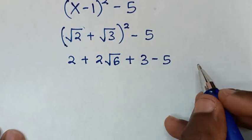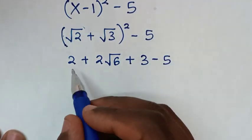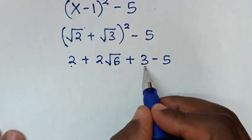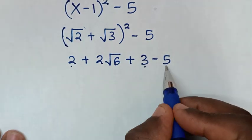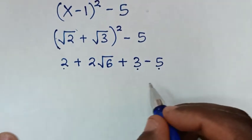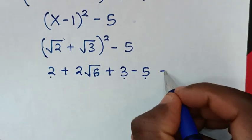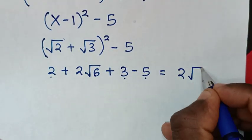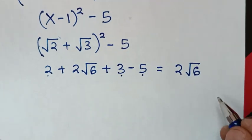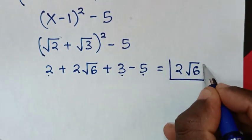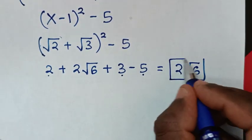In the next step, 2 + 3 = 5, and 5 - 5 = 0, so we are left with 2√6. Therefore, this is our final answer.